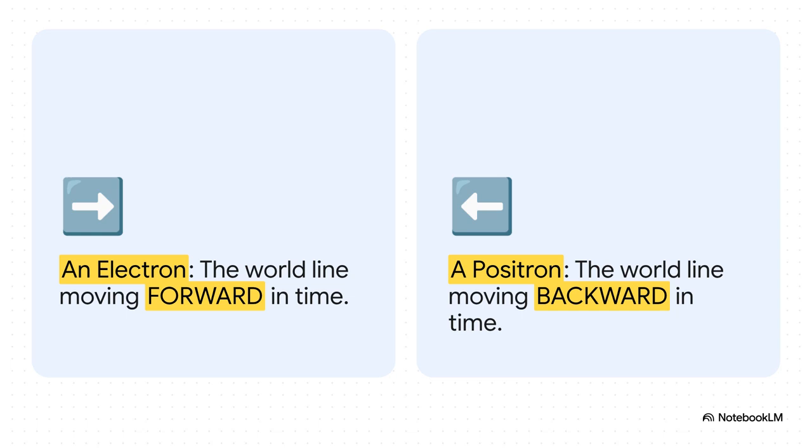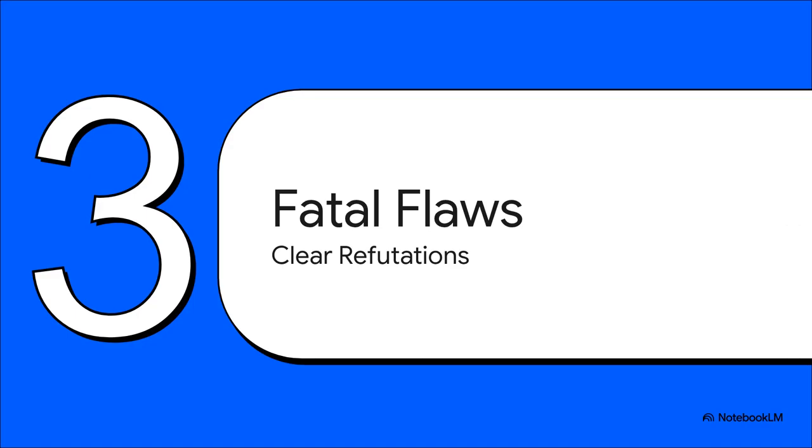And this is where the idea gets truly brilliant. Because it doesn't just explain electrons, it also explains antimatter. An electron, in this picture, is just a spot where the worldline is moving forward in time. But what happens when that line loops all the way back from the future and starts moving backward through our slice of time? We see that as an antielectron, or a positron. So in this view, matter and antimatter aren't different things at all. They're the exact same particle, just traveling in opposite directions through time. It's a beautiful idea, right? So simple, so powerful, it explains two huge mysteries in one elegant swoop.